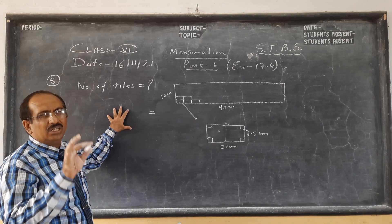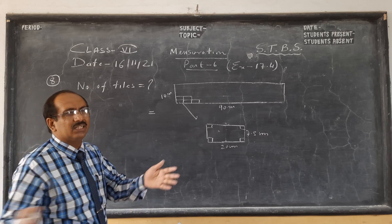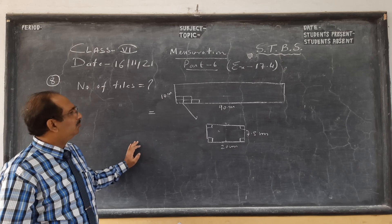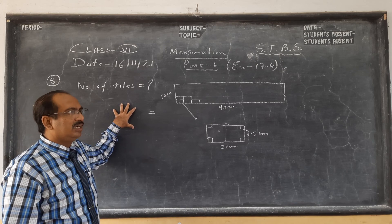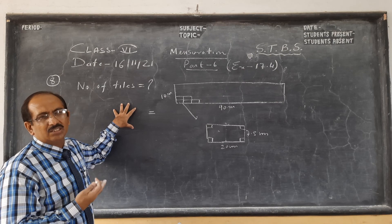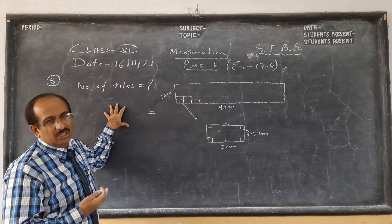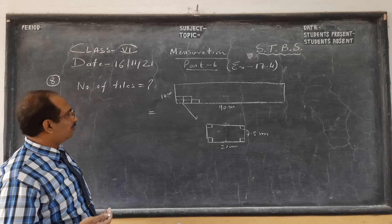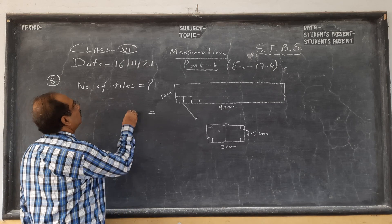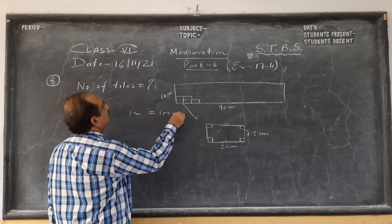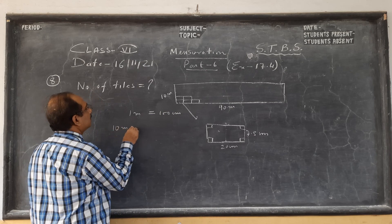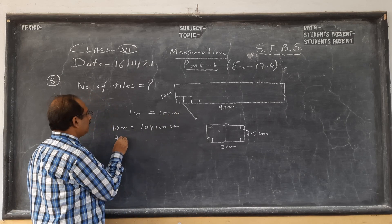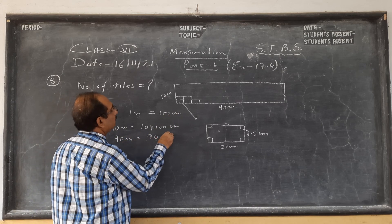You simply cannot bring too many or too few packets of tiles. In reality, some breakage will occur and some tiles will need to be cut, so we generally bring 10 percent more. Now, to find the number of tiles, convert 1 meter to centimeters: 1 meter equals 100 centimeters. Therefore 10 meters is 10 into 100 equals 1000 centimeters. Similarly 90 meters is 90 into 100 equals 9000 centimeters.